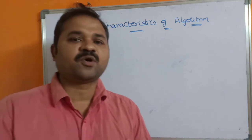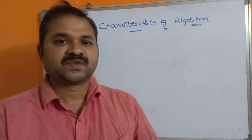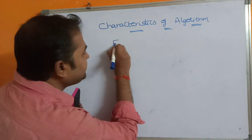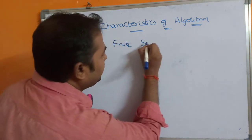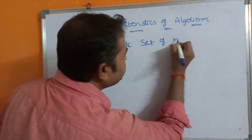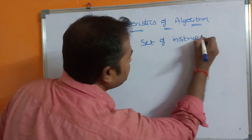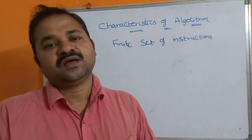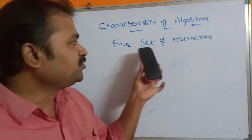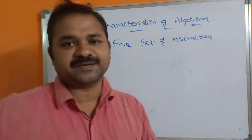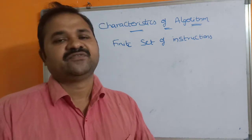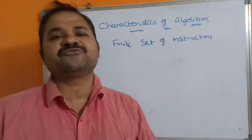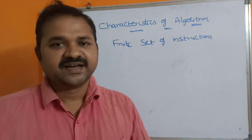In this video we are going to discuss the characteristics of an algorithm. First, let's see what an algorithm is. An algorithm is a finite set of instructions which are useful in order to solve any problem. For example, if we want to add two numbers, we write a set of instructions — that is nothing but an algorithm. Any algorithm must contain five properties or characteristics.